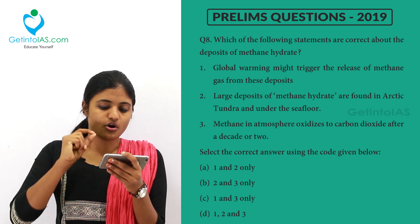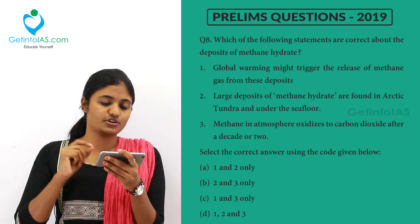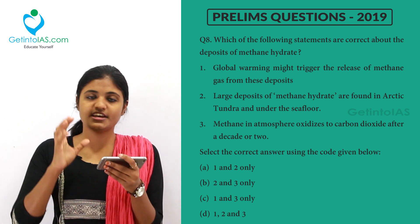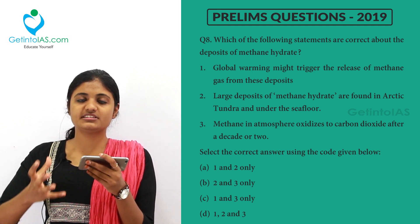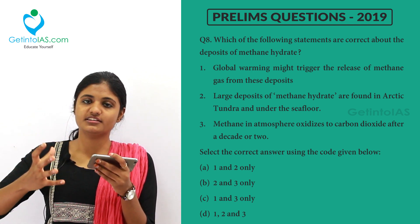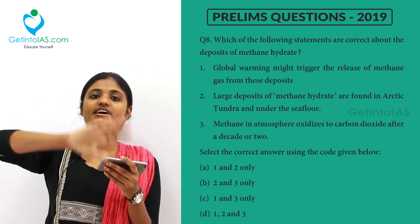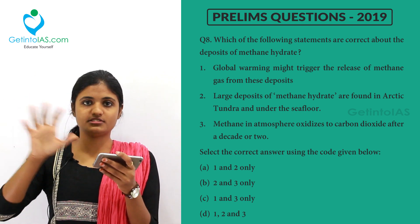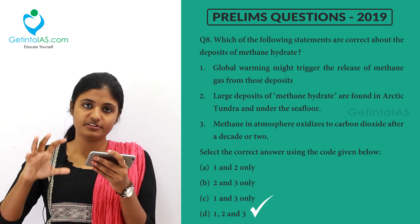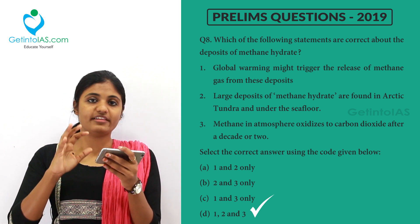Third statement: methane in the atmosphere oxidizes to carbon dioxide after a decade or two. That is, methane in the atmosphere will oxidize back to carbon dioxide after 10 to 20 years. This is the process happening. So option three is also right. All three — options one, two, and three — are correct, so option D is the correct answer.